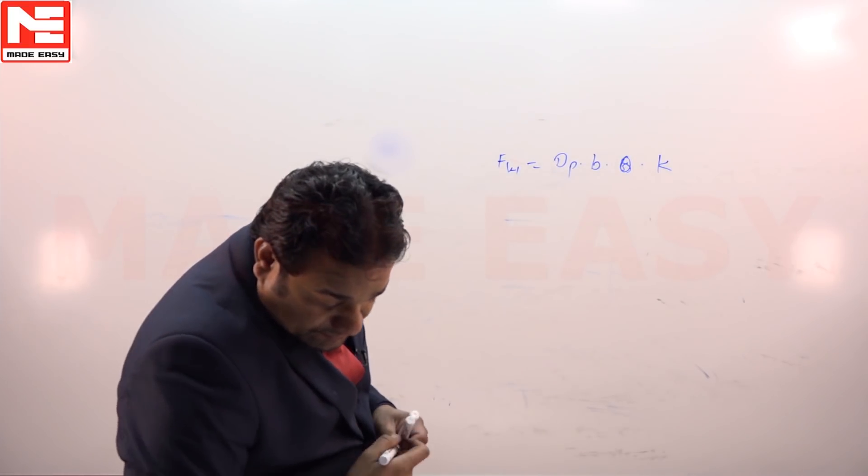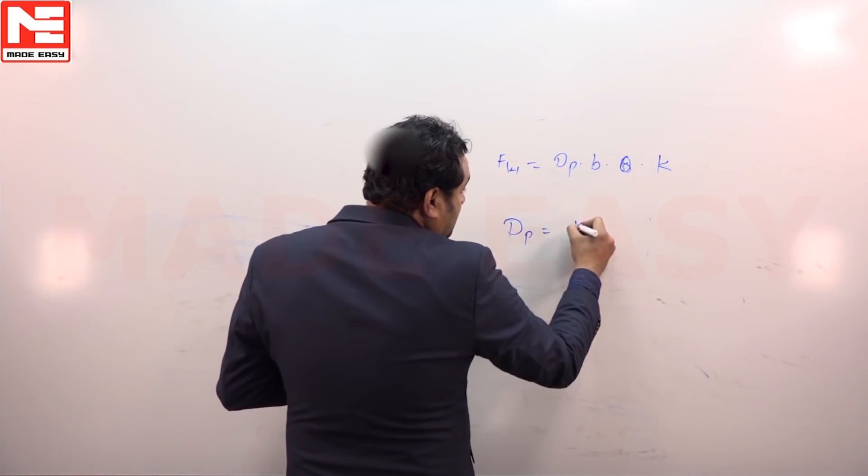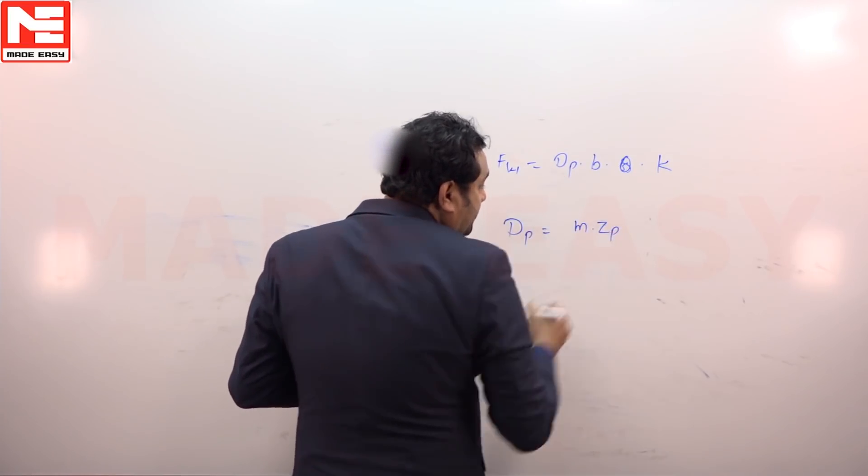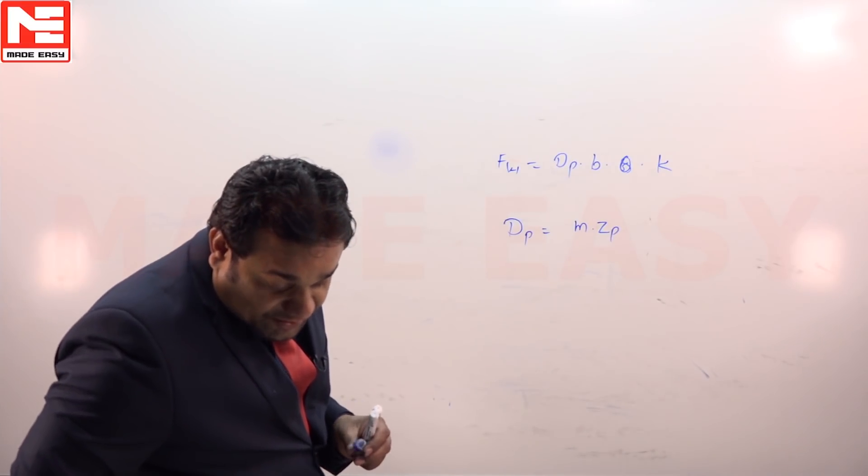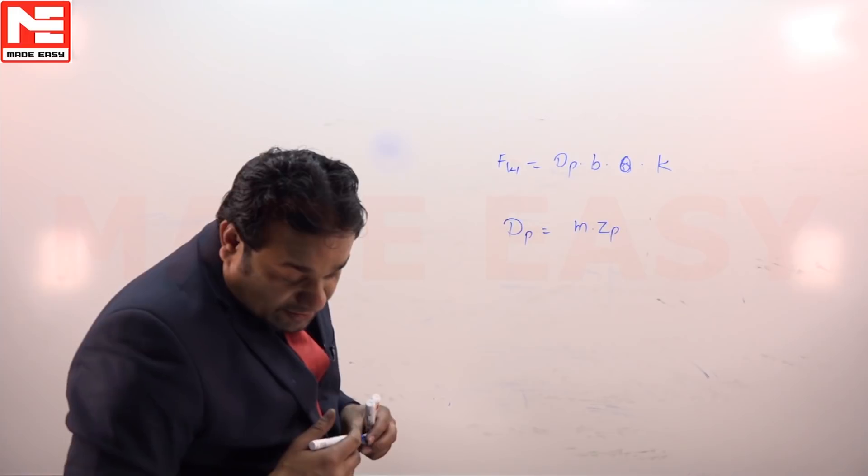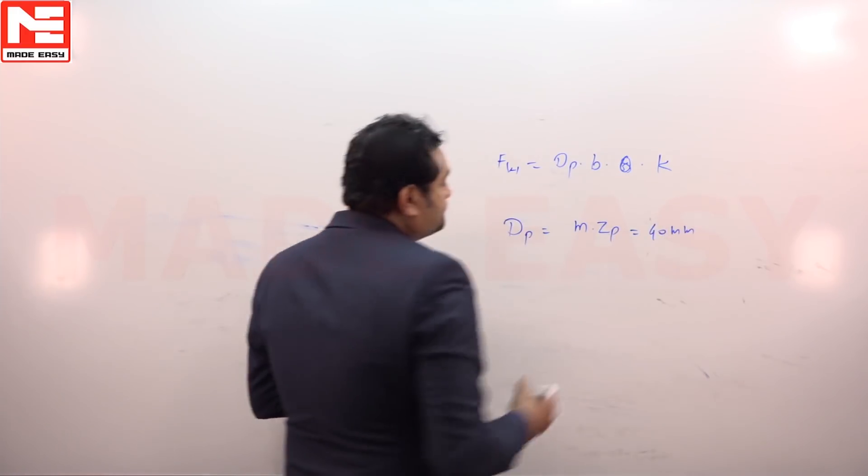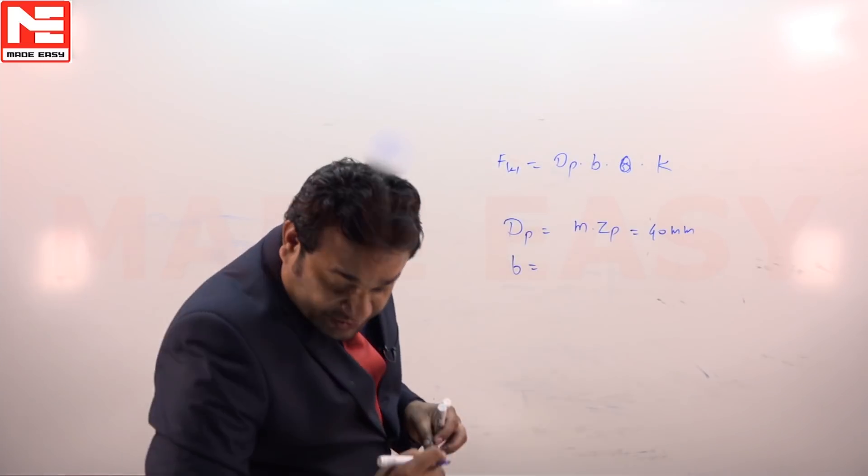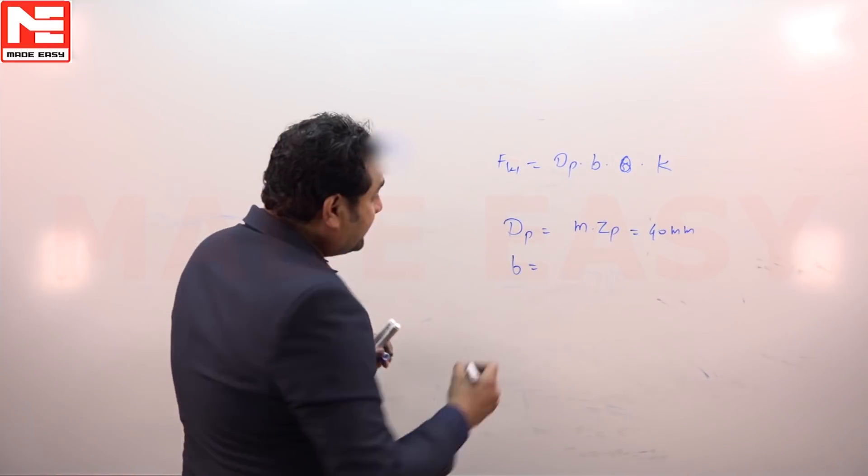Pitch diameter of the pinion Dp equals module times number of teeth for the pinion. Number of teeth is given as 20 and the module is 2, so that is 40 mm. Face width is given in the question as 20 mm.